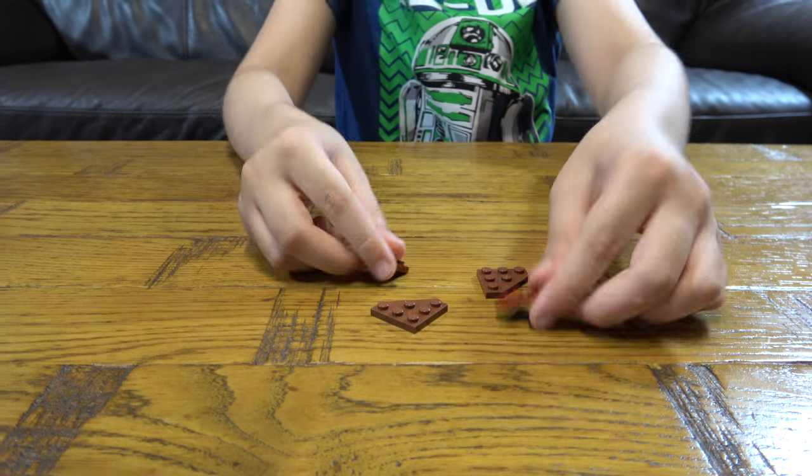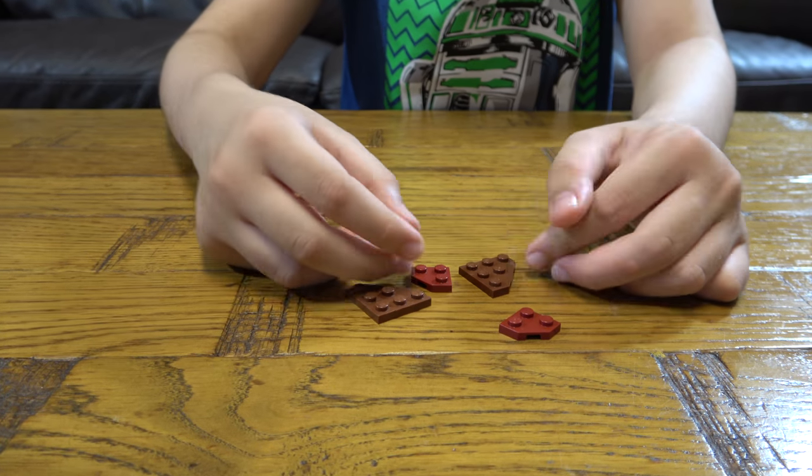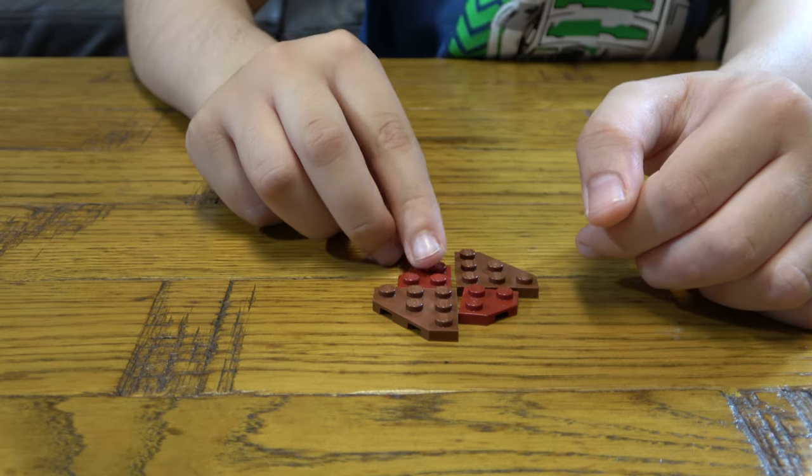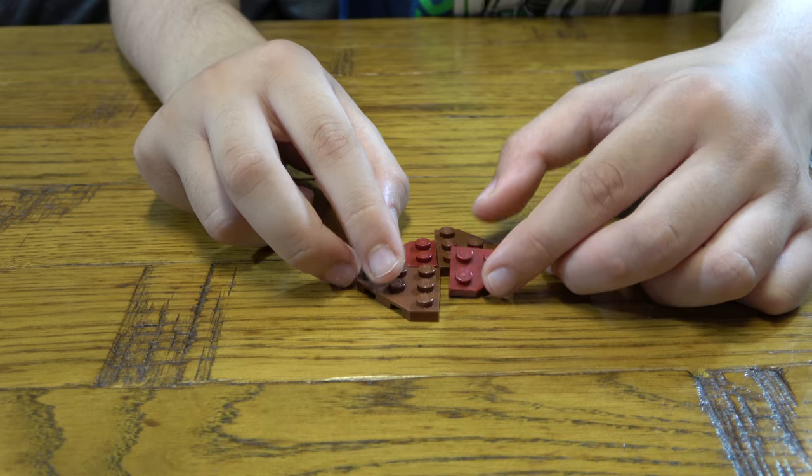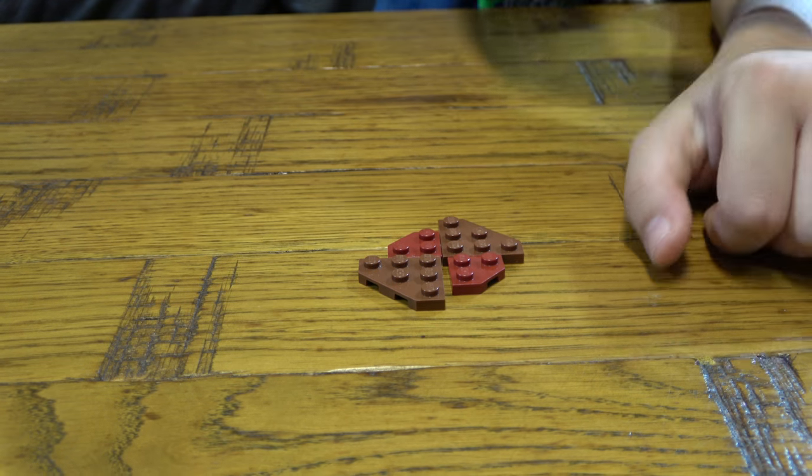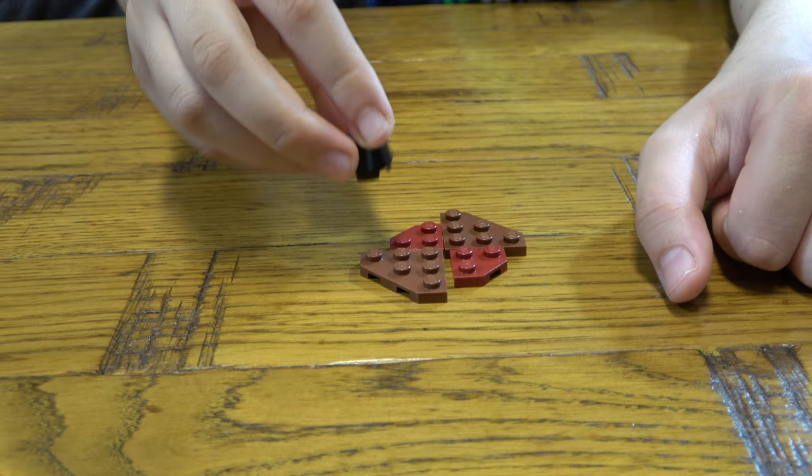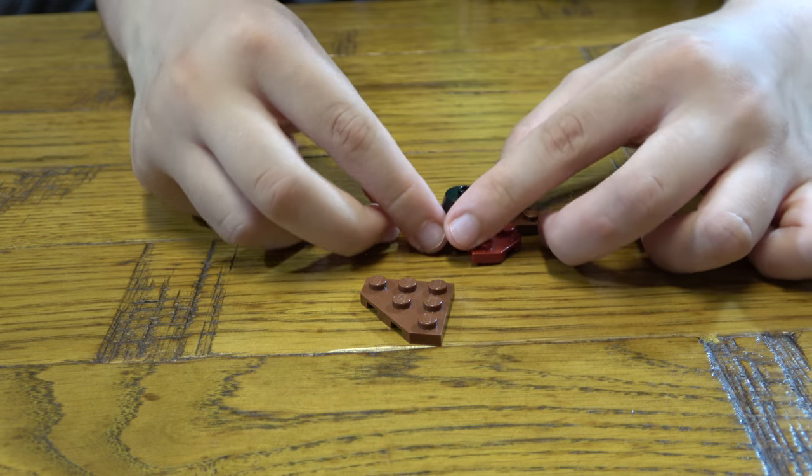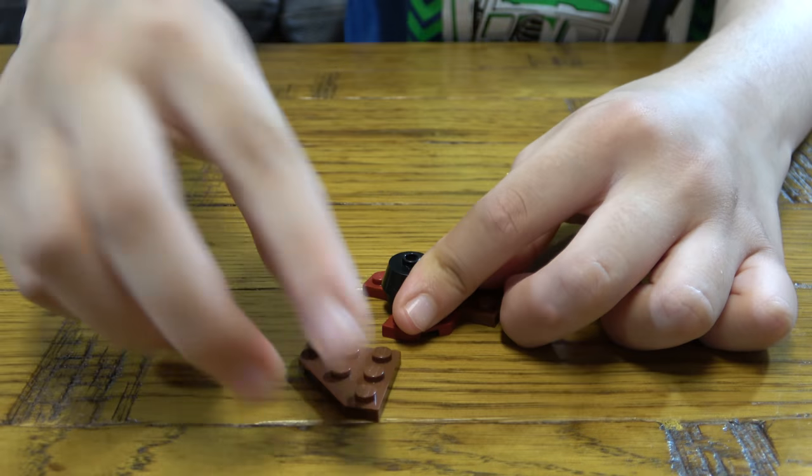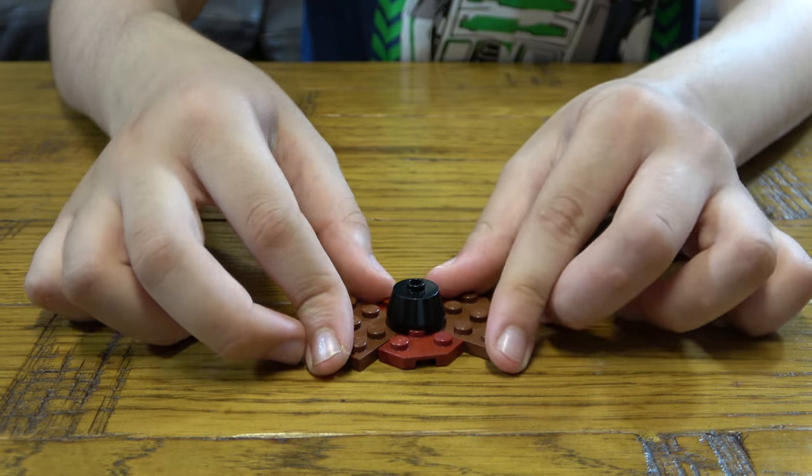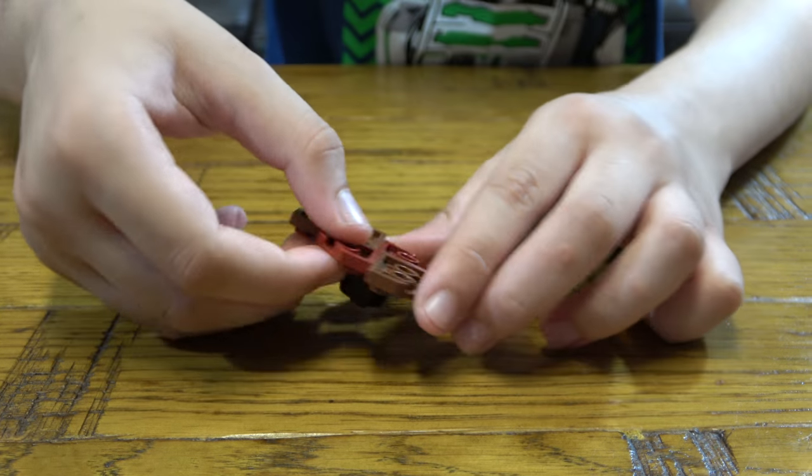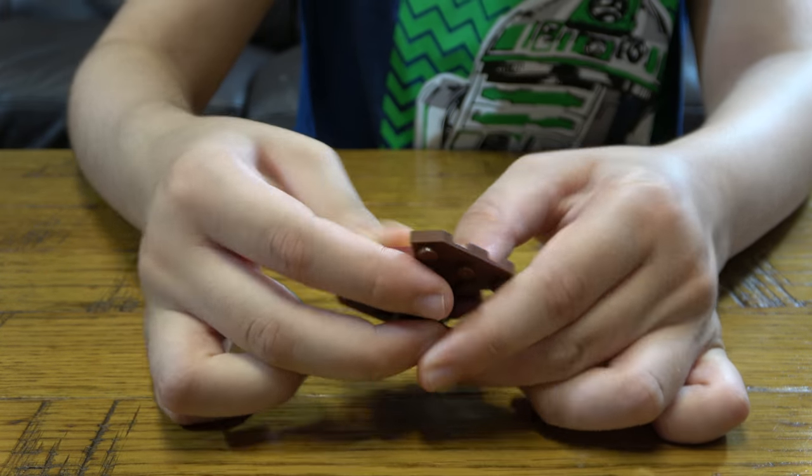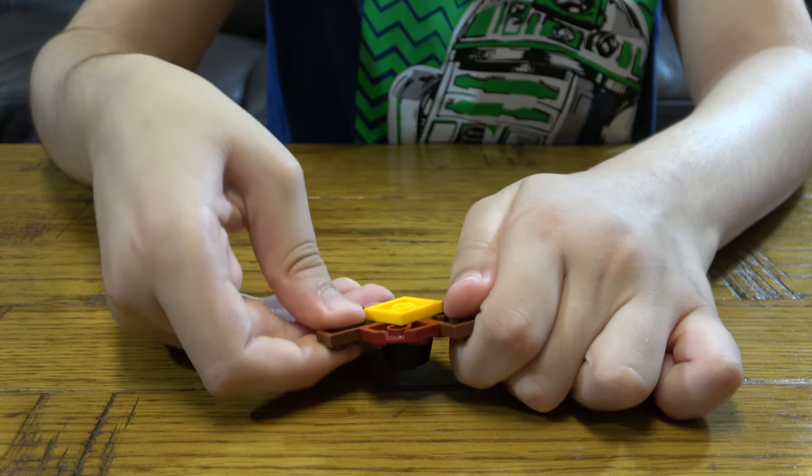Last thing we need to do is get two of these, just like that. Place that there, that there, and same like that. And then we place this here like that. Turn it like that, then you fix it, and then you place this on like so.